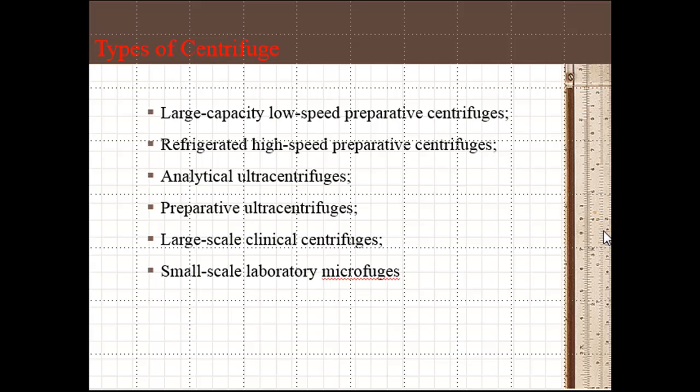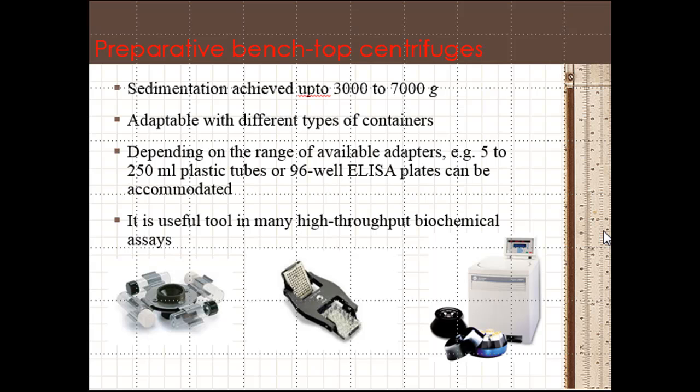Different types of centrifuge are available: large capacity low speed preparative centrifuge, refrigerated high speed preparative centrifuge, analytical ultracentrifuge, preparative ultracentrifuge, and large scale clinical centrifuge. Preparative bench top centrifuge operates up to 3000 to 7000 g, adaptable with different types of containers. For instance, tubes can be accommodated, even 96-well ELISA plates, and it's useful for many high throughput biochemical assays.